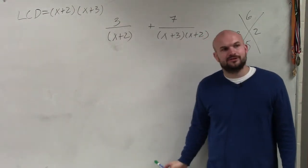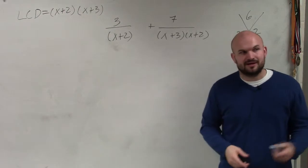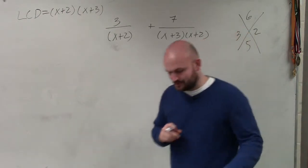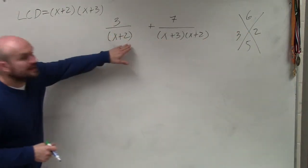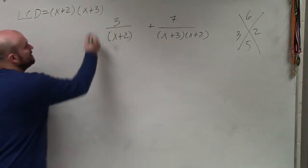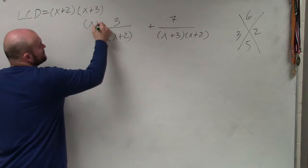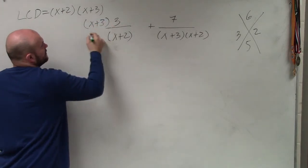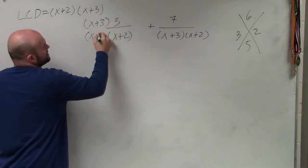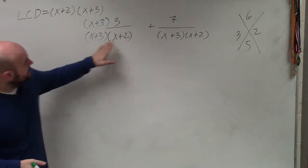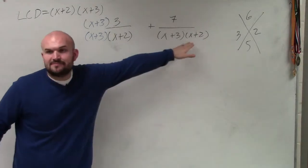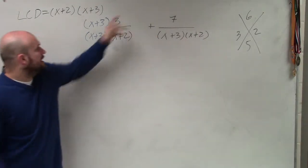I really try, guys, but multiplying denominators without factoring is really just a waste of time. So here, I'm going to be multiplying by (x + 3) over (x + 3). What that does is now gives me the same denominators.